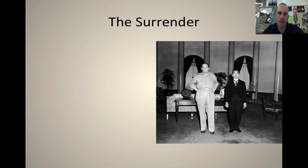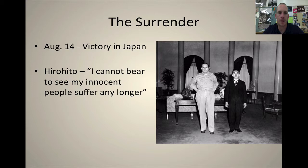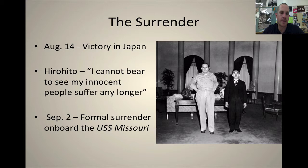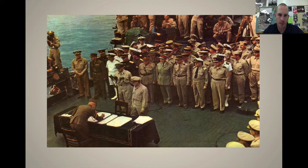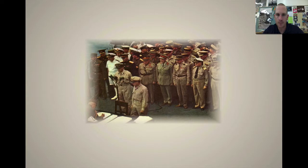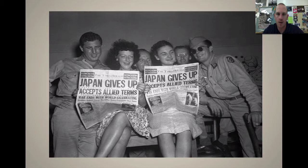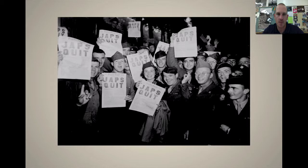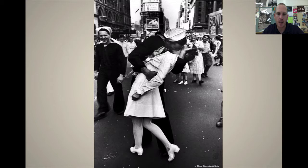Now the surrender: you can see Douglas MacArthur on the left-hand side. August 14th is declared Victory in Japan Day — it is technically August 15th in Japan due to the international dateline. Hirohito says he cannot bear to see his innocent people suffer any longer, since many of those who died were civilians. September 2nd, there is the formal surrender on board the USS Missouri — also known as the Mighty Mo — which is something of an in-your-face to the Japanese, as it was one of the ships bombed at Pearl Harbor. MacArthur oversees the signing of the complete surrender. A newspaper from that day — the Times Herald — reads 'Japan gives up, accepts allied terms.' Another reads 'Japs quit.' And then there's the famous photograph of the kiss in Times Square on VJ Day. The Allies have won.